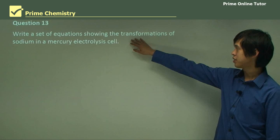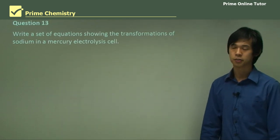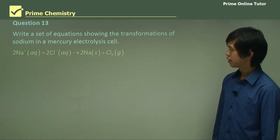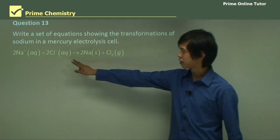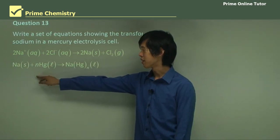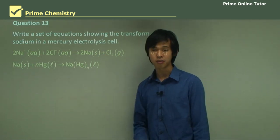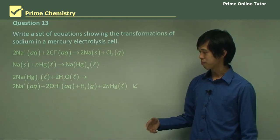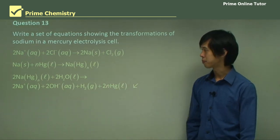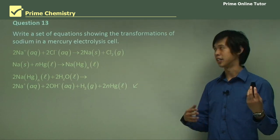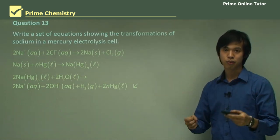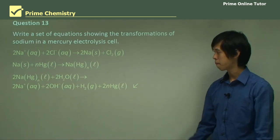Question 13: write a set of equations showing the transformation of sodium in the mercury electrolysis cell. First, sodium ions are reduced to sodium metal. Then, the sodium metal mixes with mercury to produce the sodium-mercury amalgam. Then, the sodium amalgam reacts with water to form hydrogen gas and NaOH, and the mercury is recycled. So the four steps are: Na⁺ → Na(s); Na + Hg → Na/Hg amalgam; Na/Hg + H₂O → NaOH + H₂; mercury is recycled.